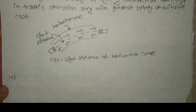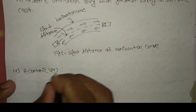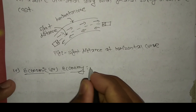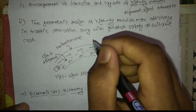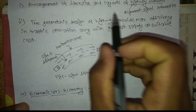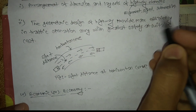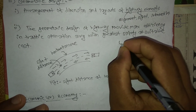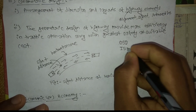Sight distance has three parts: OSD (overtaking sight distance), ISD (intermediate sight distance), and SSD (stopping sight distance).